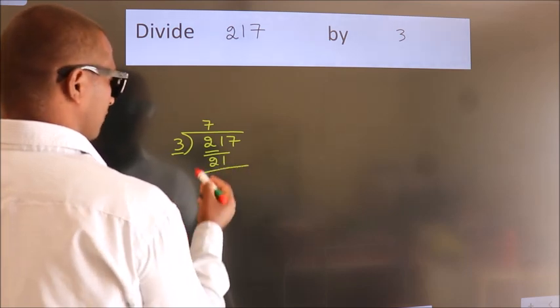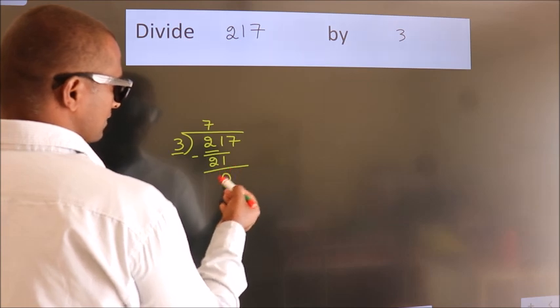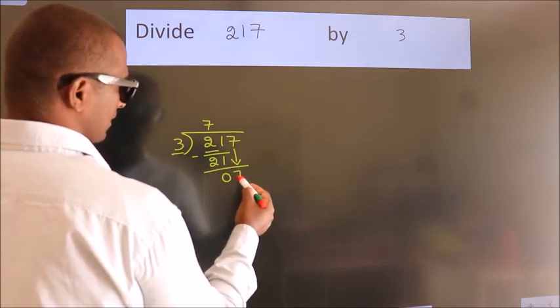Now we should subtract. We get 0. After this, bring down the next number. So 7 down. So 7.